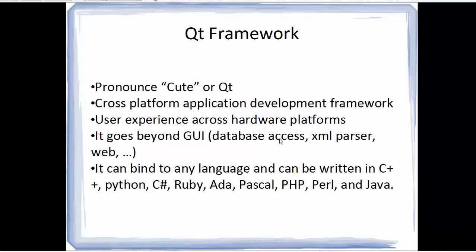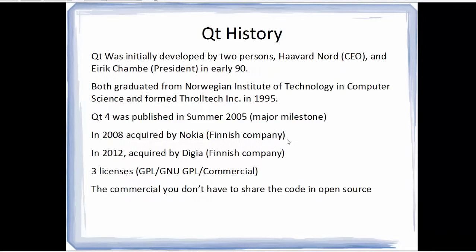Now let's see some of the history about Qt. Qt was initially developed by two Norwegian students in 1995, and they made a company called Trolltech. The major milestone in the history of Qt was Qt4, which was published in summer 2005. In 2008, the Qt company was acquired by Nokia, and in 2012 it was acquired by a Finnish company called Digia.